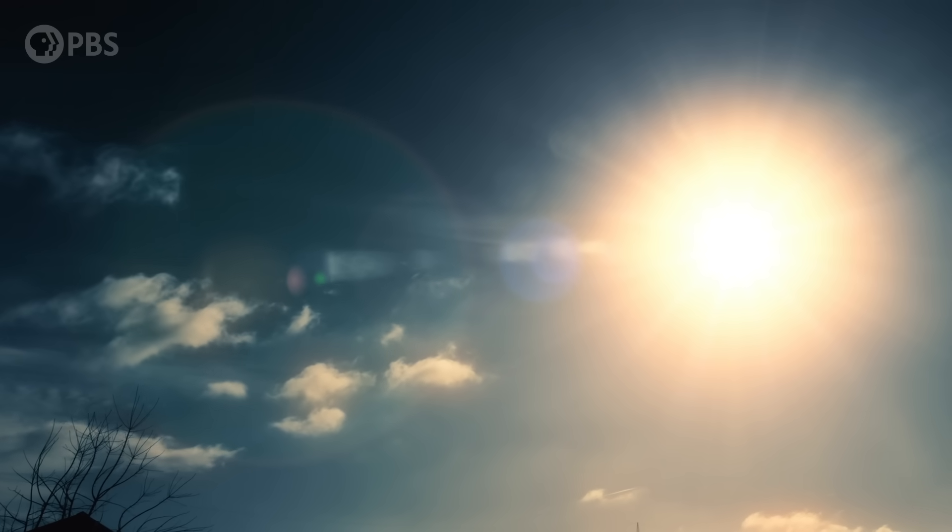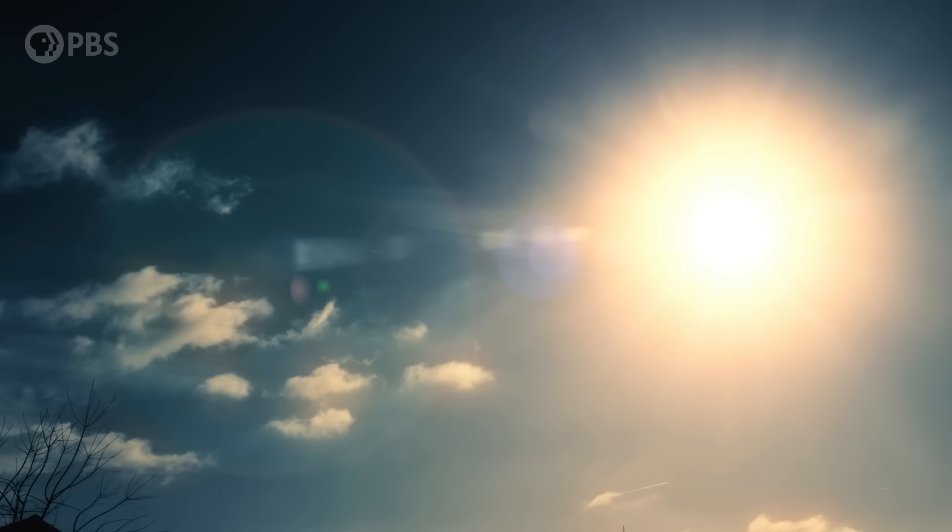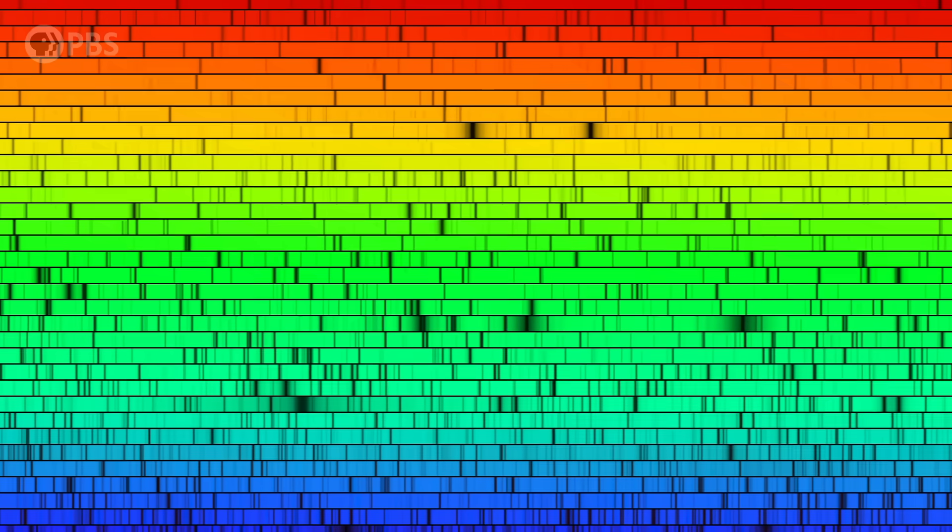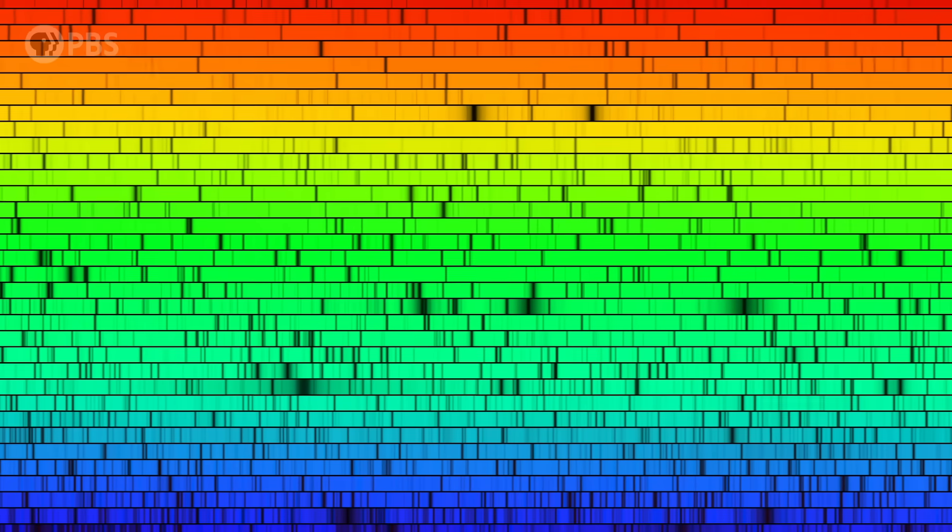When you see the sun shining on an ordinary day, you can't tell that electrons have been stealing bits of light. But if you take a closer look at that rainbow just right, you can see that some of it is missing.